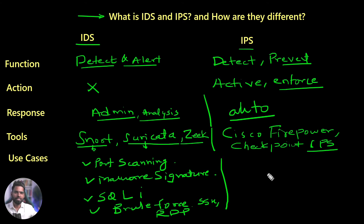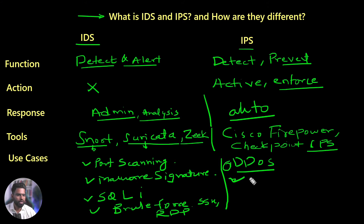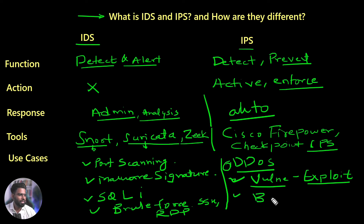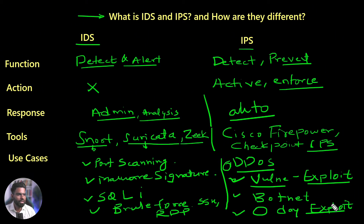When it comes to IPS, we want everything to happen automatically for advanced threats like DDoS — distributed denial of service attack. We want IPS to detect that. It can also handle intrusion attempts related to any vulnerability exploit. IPS maintains a database of all known vulnerabilities — for example, Metasploit exploits — and can detect and block that traffic. It can also be helpful in detecting botnets and, on some level, zero-day exploits.